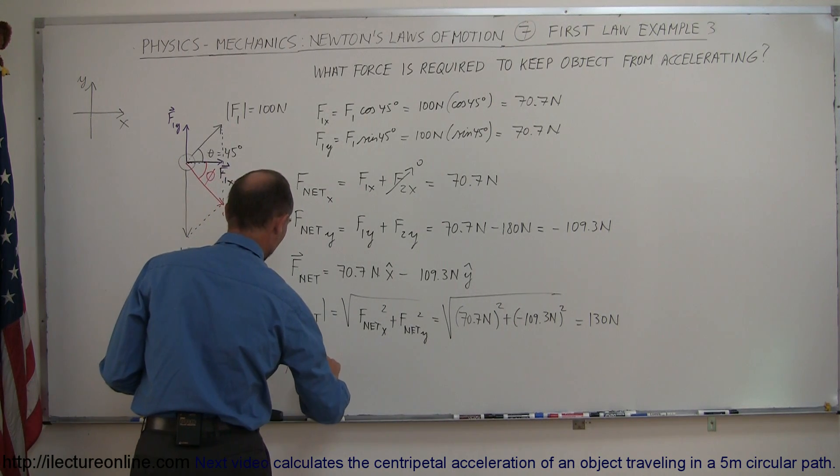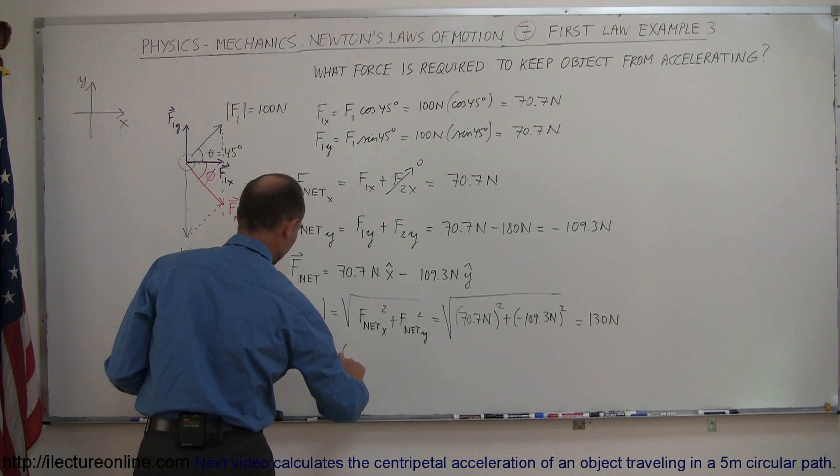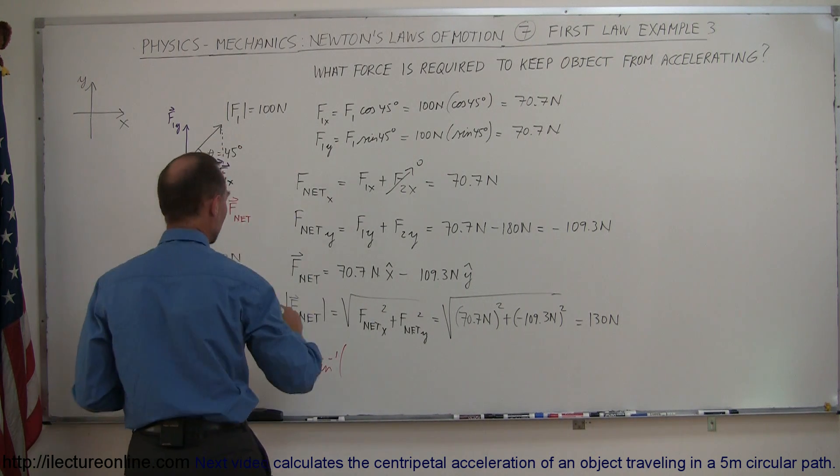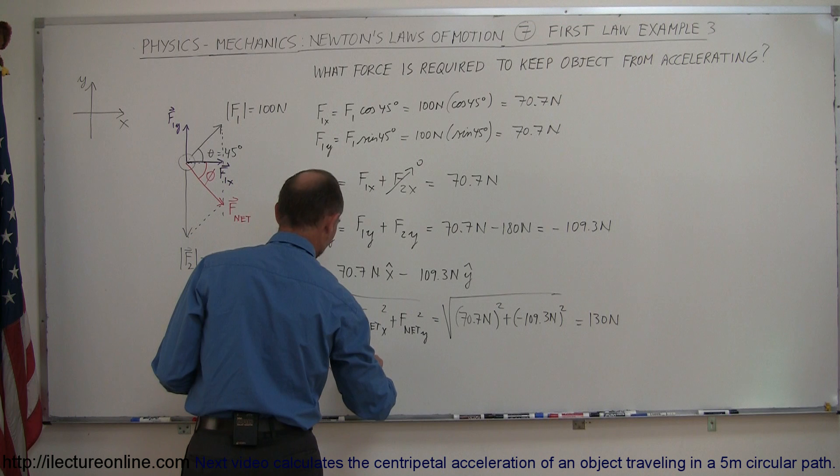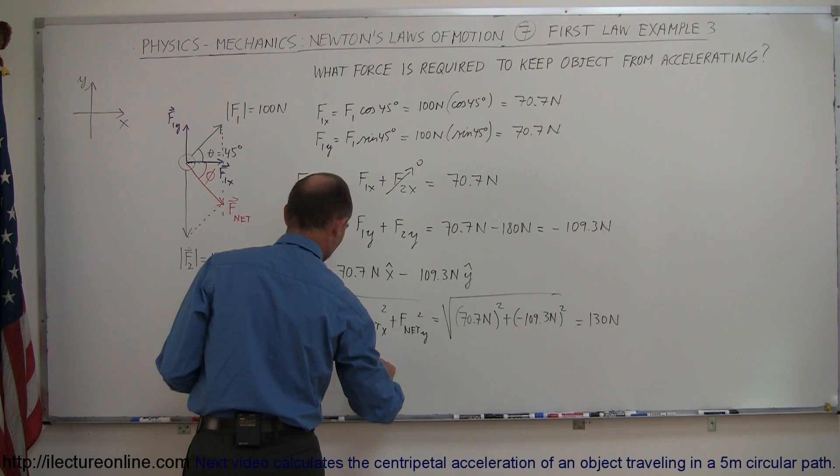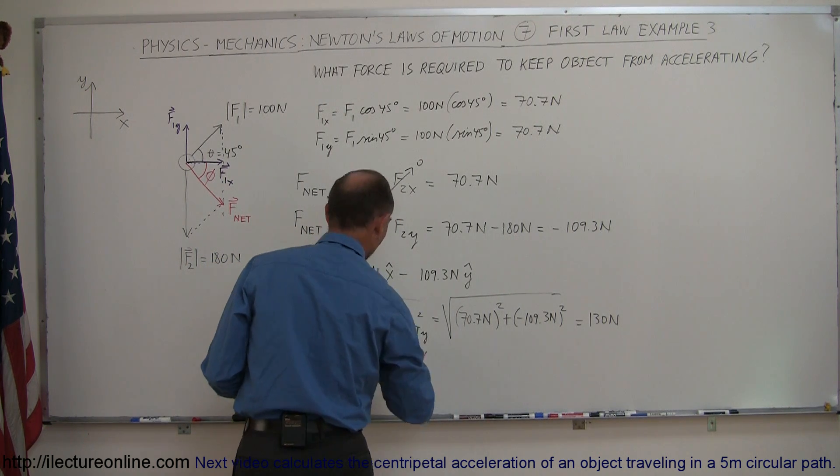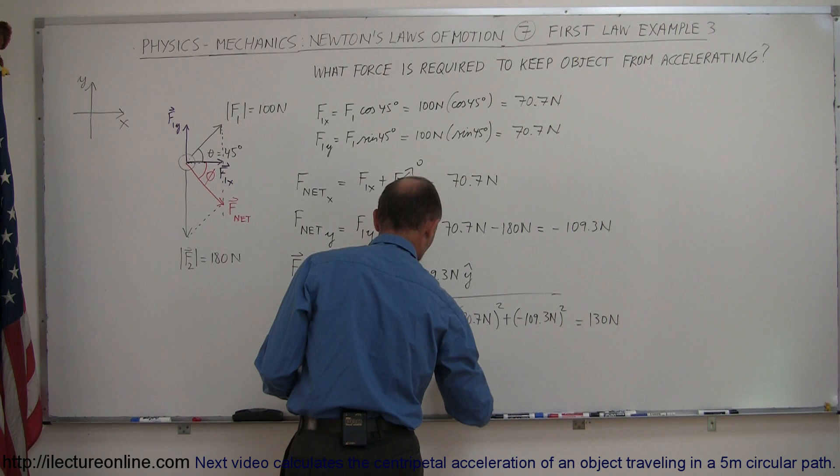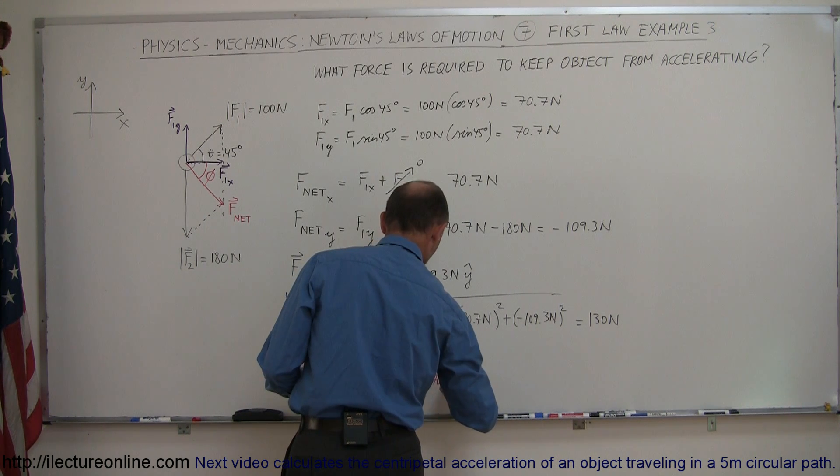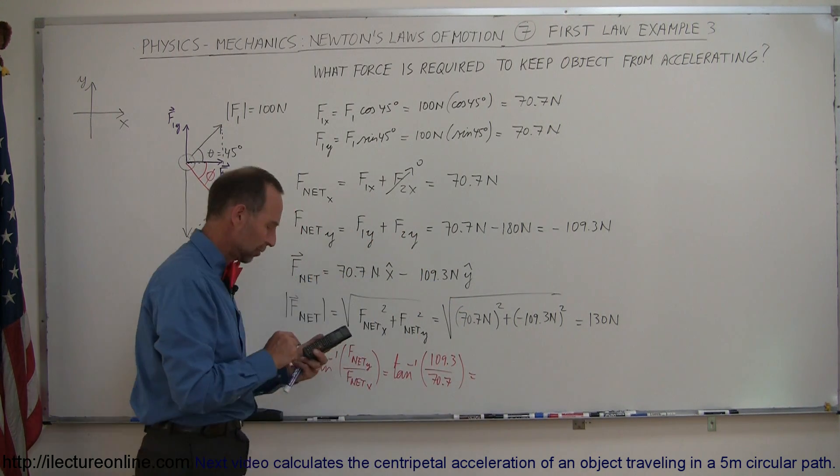So the angle is equal to the arctangent of the opposite, which would be the F sub Y net, F net Y, divided by F net X, which is equal to the arctangent of F net Y. The magnitude would be 109.3, and that would be 70.7 for the X direction.